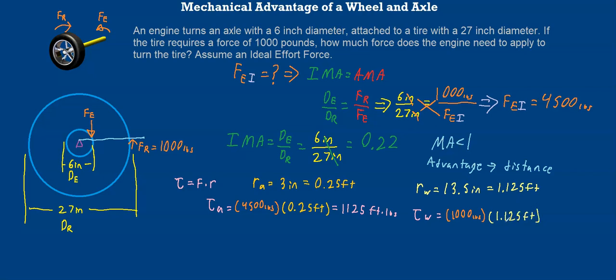So 1,000 times 1.125, you can notice there's just three zeros, so that decimal will just move three places. We get a torque at our wheel of the same thing, 1,125 foot pounds.